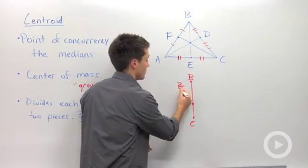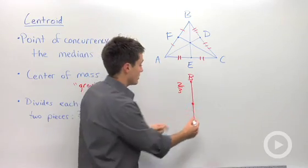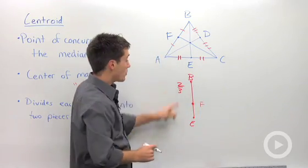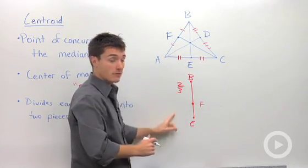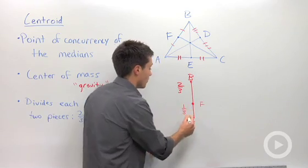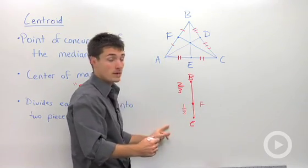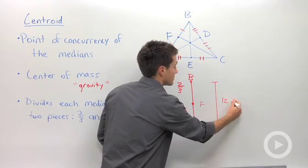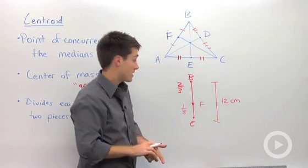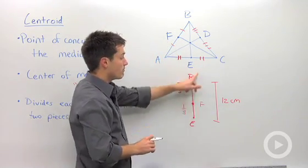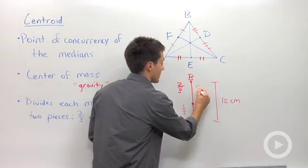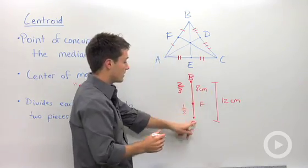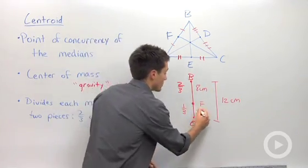So of this whole line segment, two-thirds of it will be between, I guess I could call this point F. Two-thirds will be between B and F, and one-third will be between F and E. So if this whole segment was, let's say, 12 centimeters, then you could say that this part right here, BF, would be 8 centimeters, and FE would be 4 centimeters.